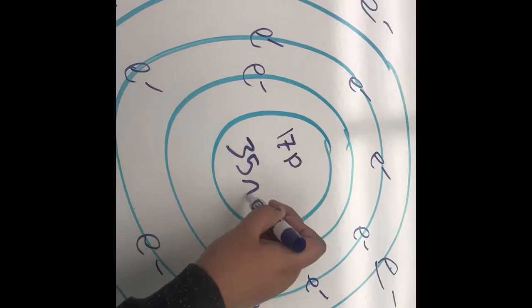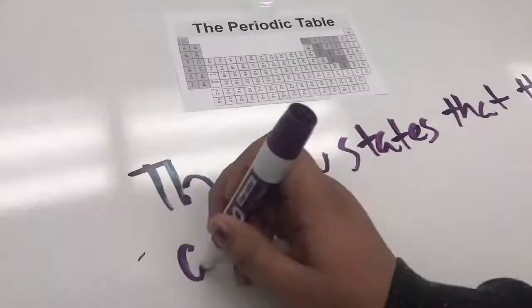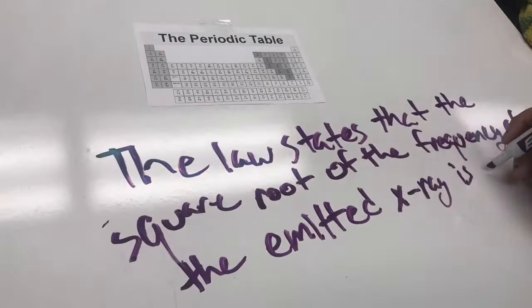This changed the periodic table to not be ordered by mass. The law states that the square root of the frequency of the emitted X-ray is proportional to the atomic number.